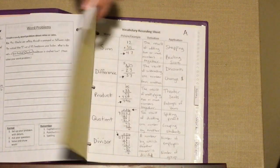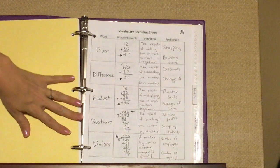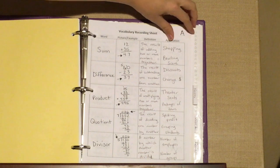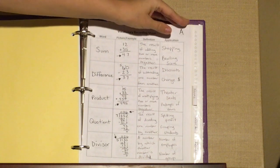Alright, the next tab is vocabulary, and again, the vocabulary will stay in here at all times, and there's letters in the corner, so they should just be in order, A, B, C, D, E, F, G.